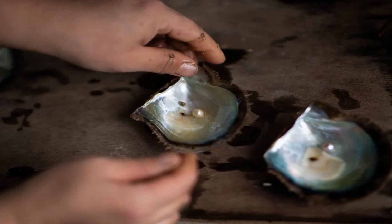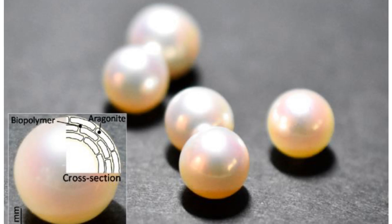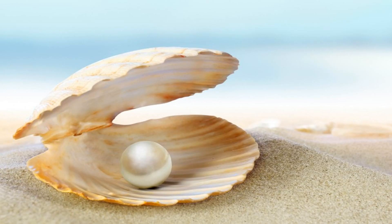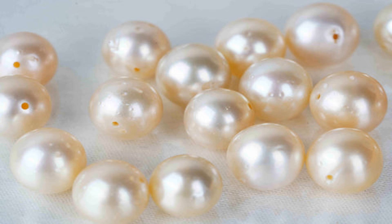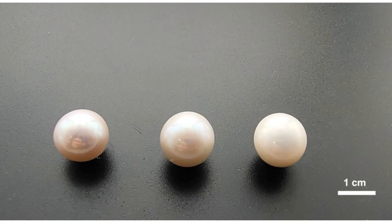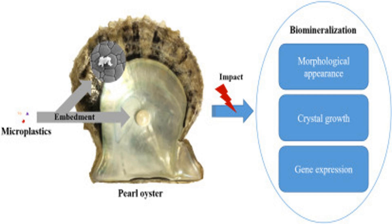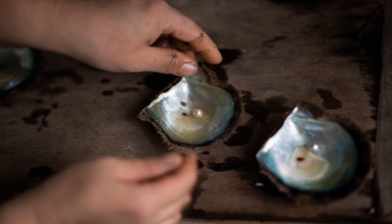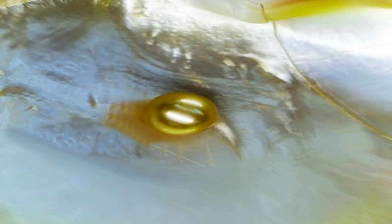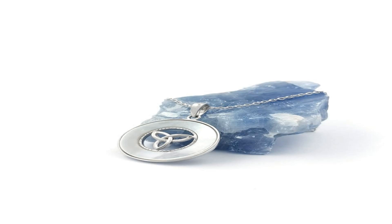The irritant becomes encased within multiple layers of nacre, resulting in the formation of a pearl. As more and more layers of nacre are added, the pearl grows in size and gains its characteristic lustrous appearance. The accumulation of nacre not only protects the mollusk's soft tissues but also creates a mesmerizing gem that is treasured for its beauty. Factors such as the mollusk species, the duration of nacre deposition, and environmental conditions influence the final characteristics of the pearl.